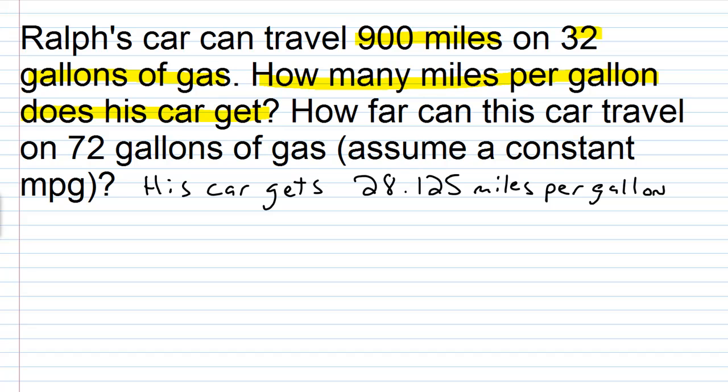Okay, now we want to move into answering the second question, which is how far can this car travel on 72 gallons of gas? It says assume a constant miles per gallon. So basically, all you need to do now, since you know how many miles per gallon this car gets—28.125—and the question is how far can it go on 72 gallons of gas, we just need to multiply.